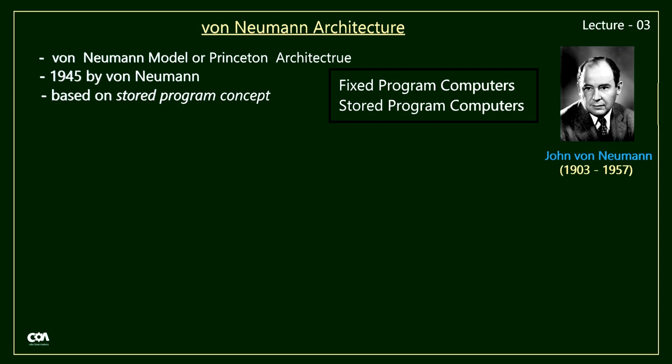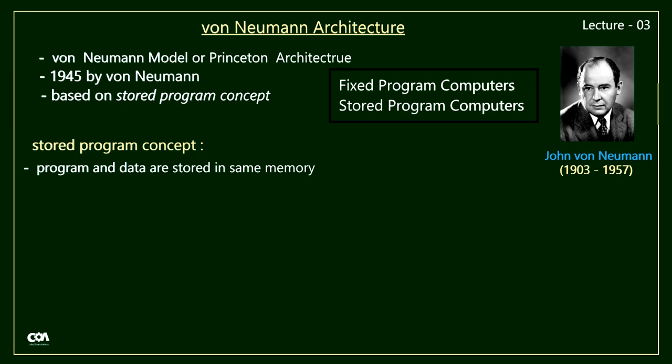The stored program concept says that programs and data are stored in the same memory. Since the program and data are stored in the same memory, instruction fetch and data operation cannot occur at the same time. This concept was developed by John Von Neumann, though at the same time the same idea was developed by Alan Turing. Von Neumann published this idea first. Von Neumann architecture is also known as the IAS computer.